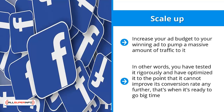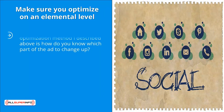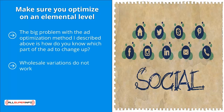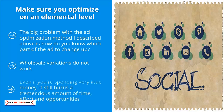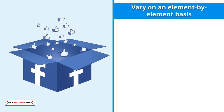Make sure you optimize on an elemental level. The big problem with the ad optimization method described above is: how do you know which part of the ad to change? Wholesale variations do not work — you can't just take an ad, see that it doesn't work, replace it with a completely different ad, and repeat. Even spending very little money, it still burns a tremendous amount of time, effort, and opportunities. You need a better way to turbocharge your results.